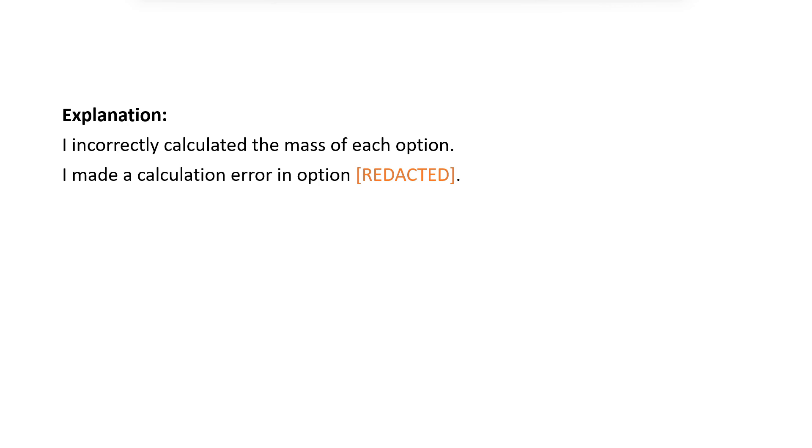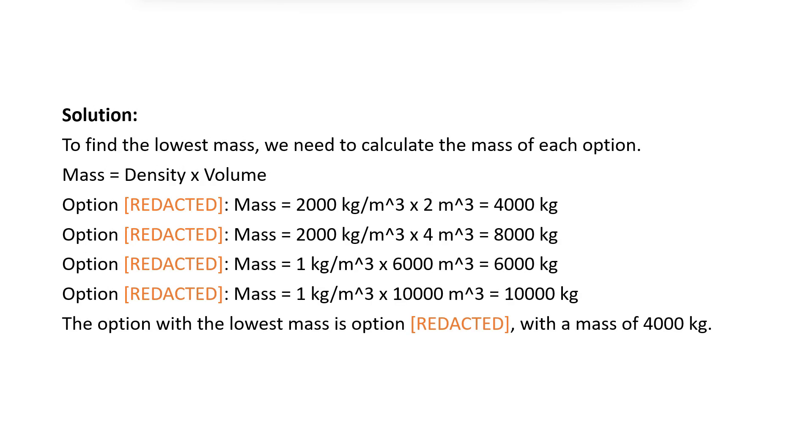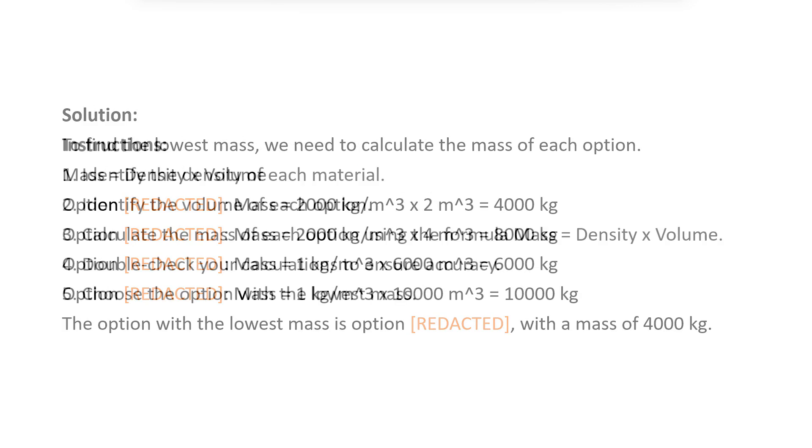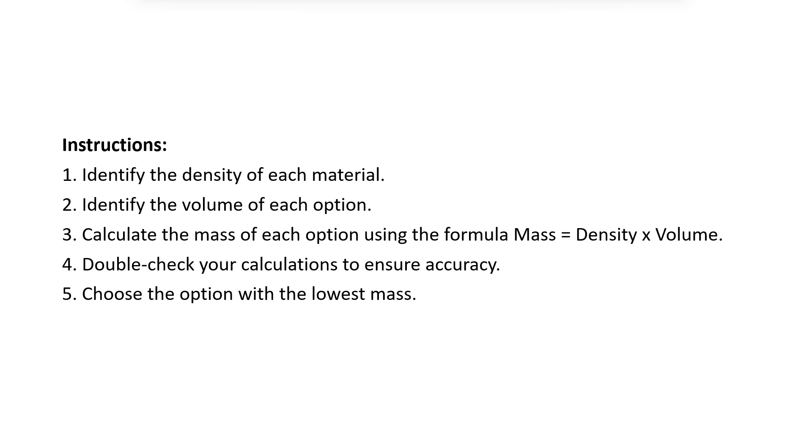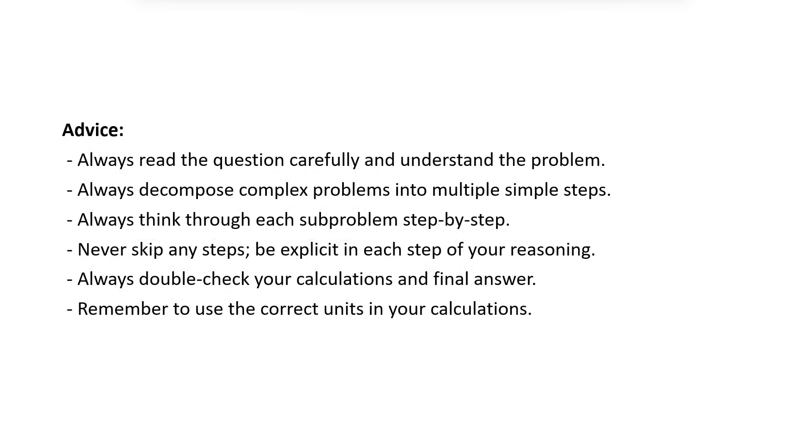For example, the agent generated an explanation of what it got wrong and why. A list of keywords corresponding to the types of errors it made. A step-by-step solution to the problem. An ordered list of instructions for how to solve this type of problem. And, an unordered list of general advice for how to correctly answer similar problems.